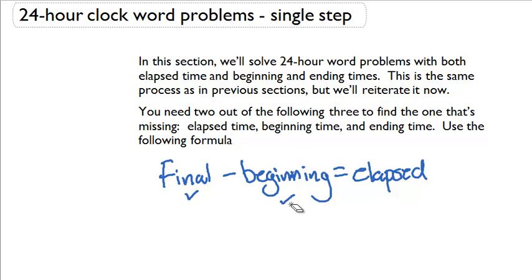Now the question is, what if they give you the elapsed time and the beginning time? If they give you the elapsed time and the beginning time, you can bring all this over here and add it. So elapsed time plus the beginning time will equal the final time.